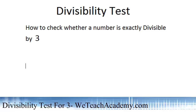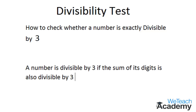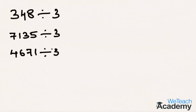Hey guys, welcome to pteachacademy.com. In this presentation we are going to do the divisibility test on number 3, that is how to check whether a number is exactly divisible by 3. A number is divisible by 3 if the sum of its digits is also divisible by 3. Let us consider a few examples and check if these numbers are exactly divisible by 3.